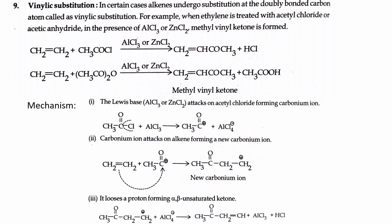This reaction is also carried out with acetyl chloride. Acetyl chloride forms methyl vinyl ketone. Acetic anhydride also gives the same reaction. The acetyl portion replaces one of the hydrogens, and the leftover portion attaches to the carbon, forming methyl vinyl ketone.